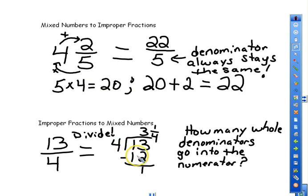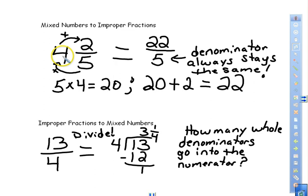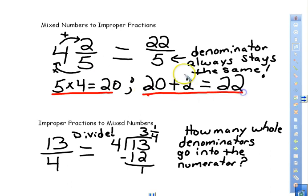To convert mixed numbers to an improper fraction, take the denominator times the whole number. This represents how many parts it takes to make one whole. So if we've got four wholes, we multiply five times four, which is twenty. Then take that answer and add it to the numerator — there are two parts remaining — giving us a total of 22. The denominator always stays the same.